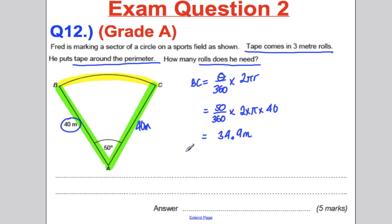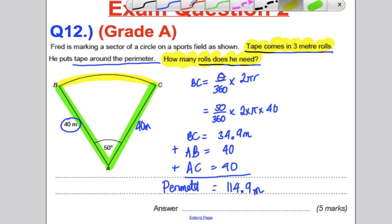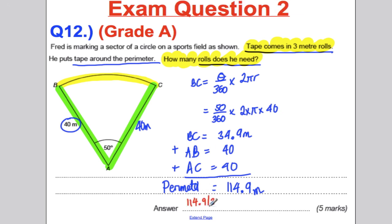We also need to add both radii: AB = 40 metres and AC = 40 metres. Total perimeter = 34.9 + 40 + 40 = 114.9 metres. Dividing by 3 metres per roll: 114.9 ÷ 3 = 38.3, so Fred needs 39 rolls, because you can't buy 0.3 of a roll.